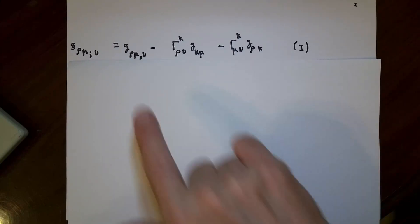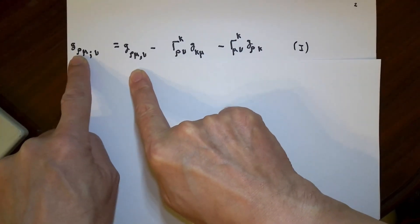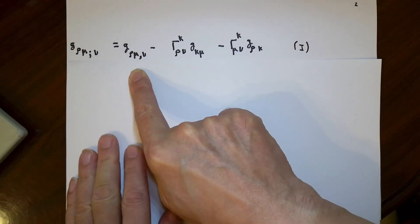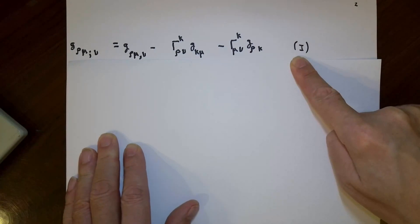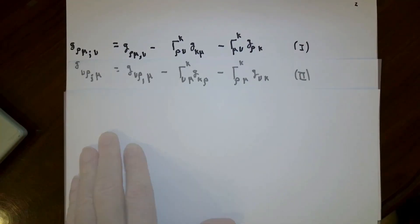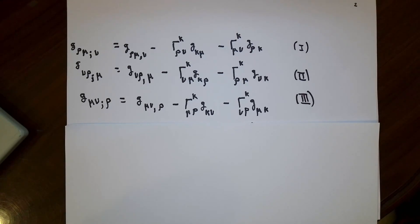I'm going to write down this same equation, except I'm going to permute the indexes. So I can easily get a formula for G_νρ;μ, and I can get a formula for G_μν;ρ. It's important to understand that these three equations all say the same thing. If any one of them is true, then the other two are true also.